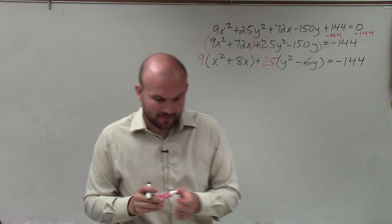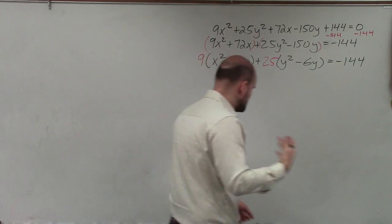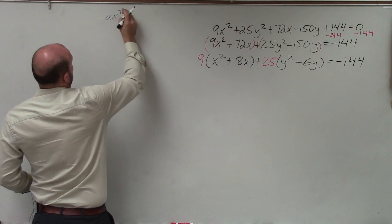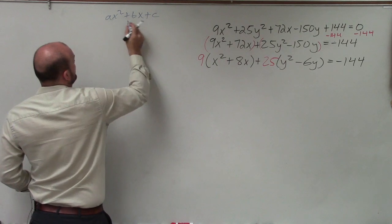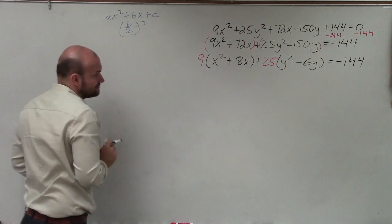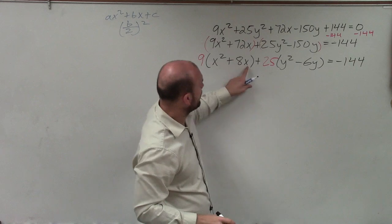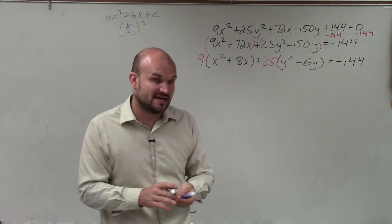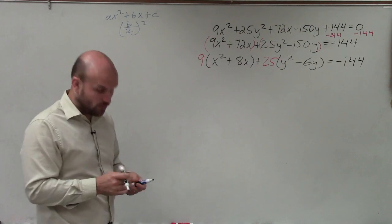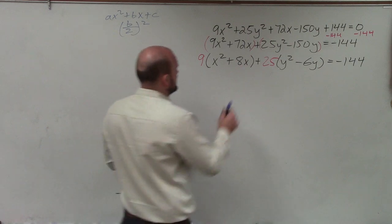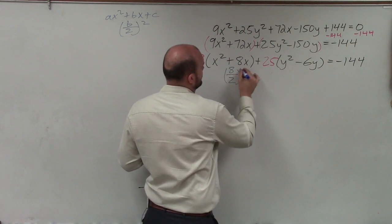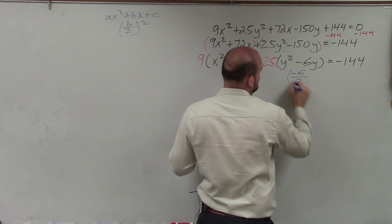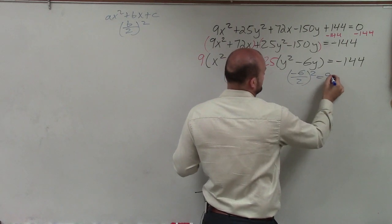Now comes the lovely part of completing the square, creating that perfect square trinomial. When we have a quadratic in the form of ax² + bx + c, to complete the square, we're going to take b divided by 2 and square it. In each one of these parentheses, I have quadratics. They just don't have c's. However, I can still take the value of b divided by 2 and square it. I'll take 8 divided by 2 and square it. 8 divided by 2 is 4, 4 squared equals 16. Here I have negative 6 divided by 2 squared. Negative 3, that equals 9.